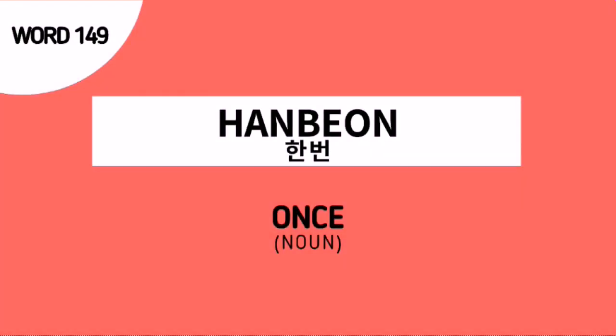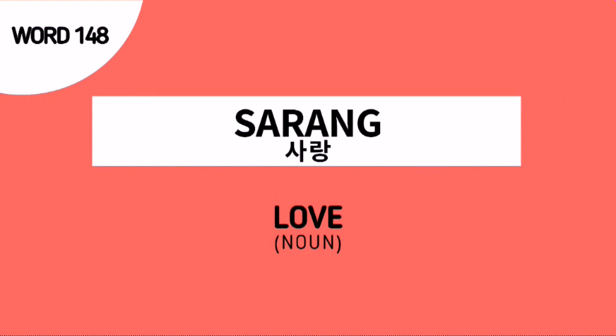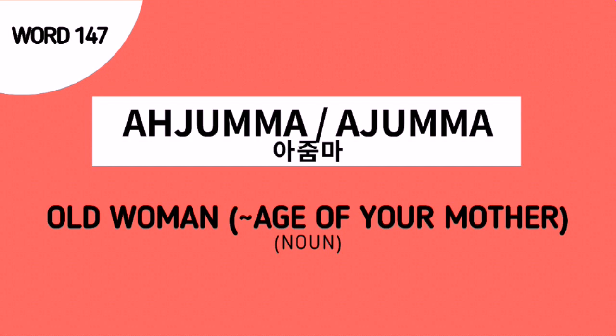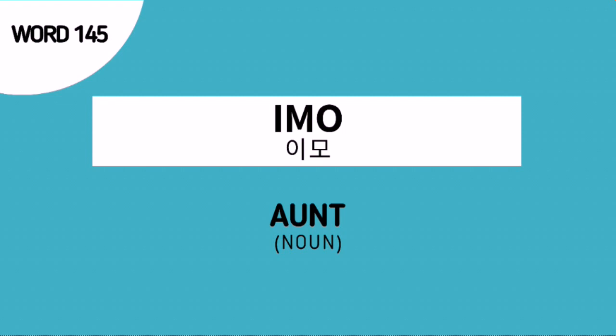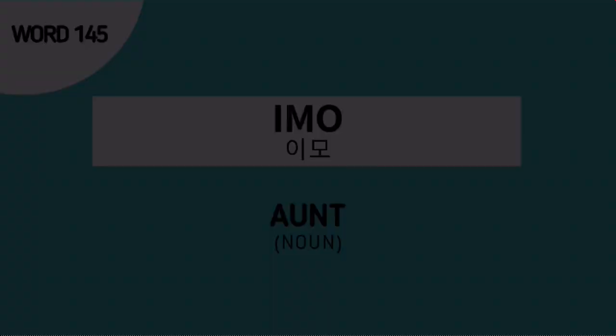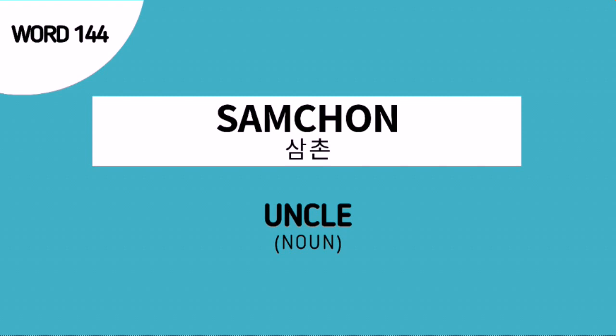Word number 149 is Hanbon, which means once. Word number 148 is Sara, the Korean noun for love. Word number 147 is Ajumma, the Korean noun for an older woman approximately of the same age as our mother. Word number 146 is Ajeossi, the Korean noun for an older man approximately of the same age as our father.